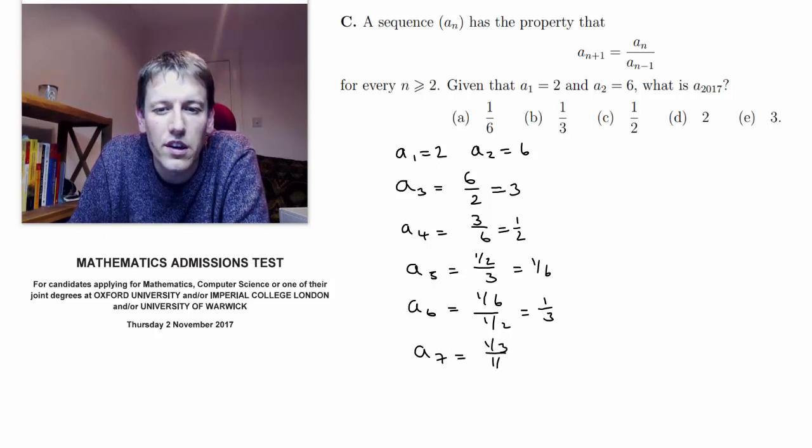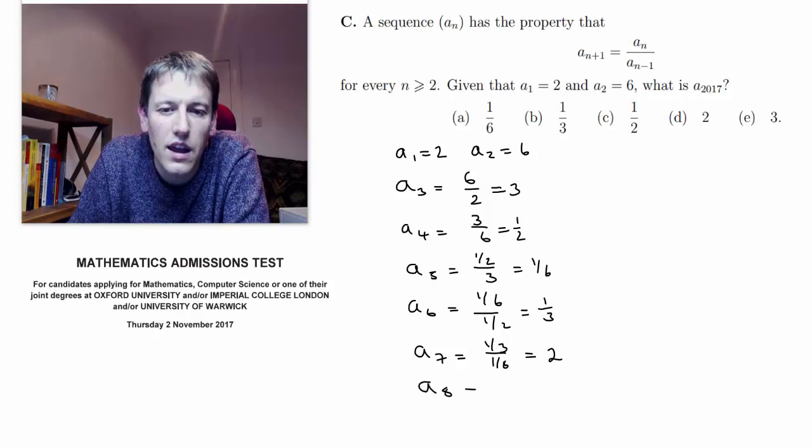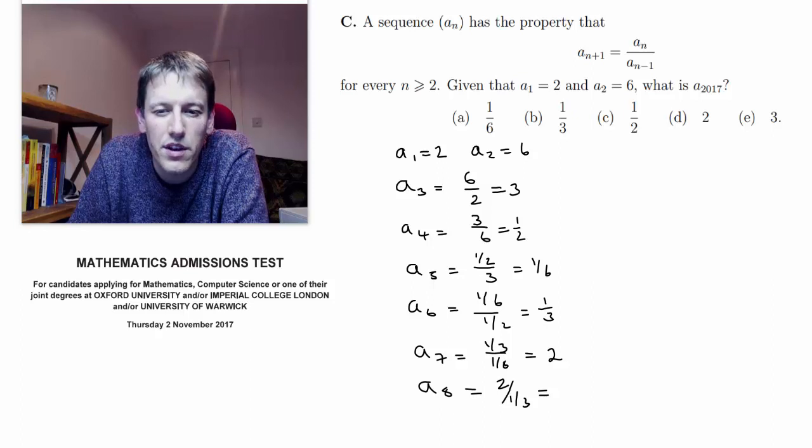a7 is one third divided by one sixth, so one third times 6, which is 2. a8 is 2 divided by one third, and 2 divided by one third is 6.